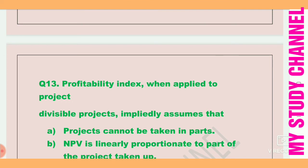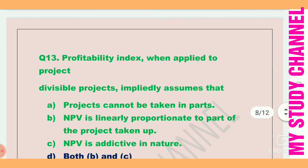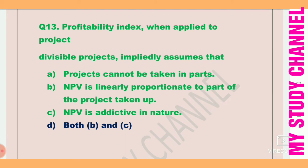Next question: Profitability index when applied to divisible projects impliedly assumes — option A is that projects cannot be taken in parts, B is NPV is linearly proportionate to part of the project taken up, C is NPV is additive in nature. Option D (B and C) is the right answer — NPV is linearly proportionate and additive in nature.